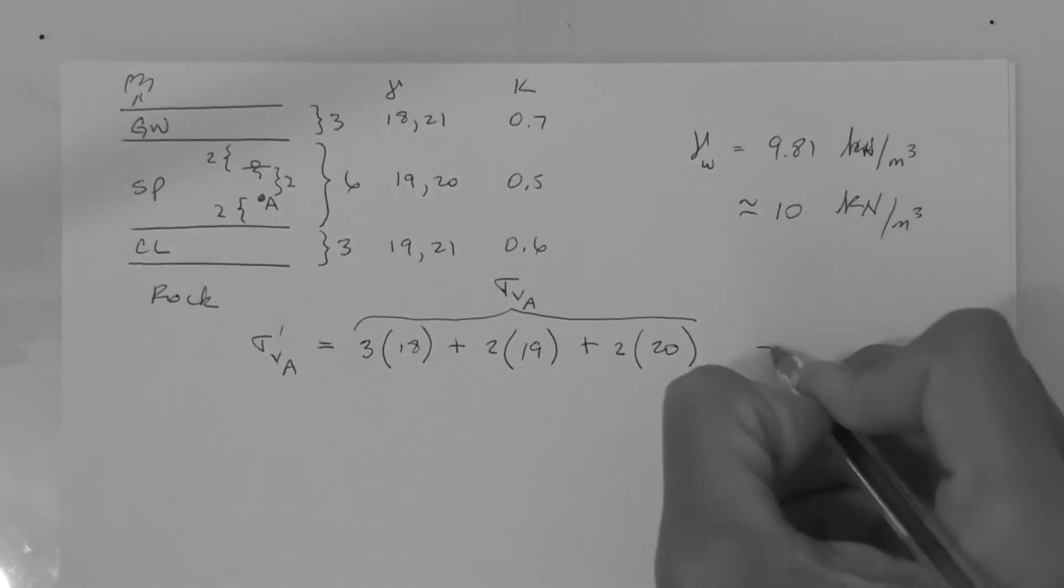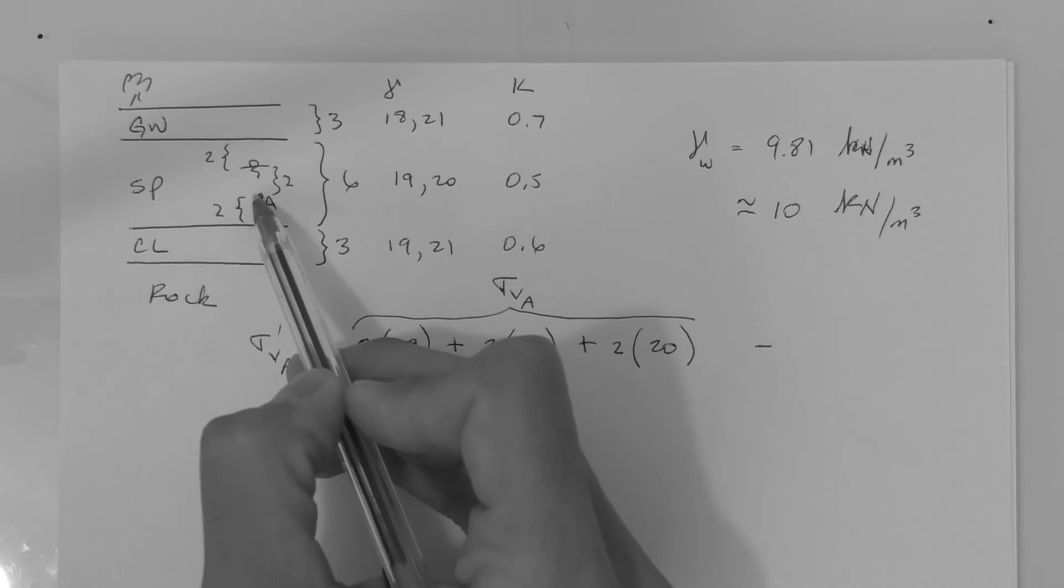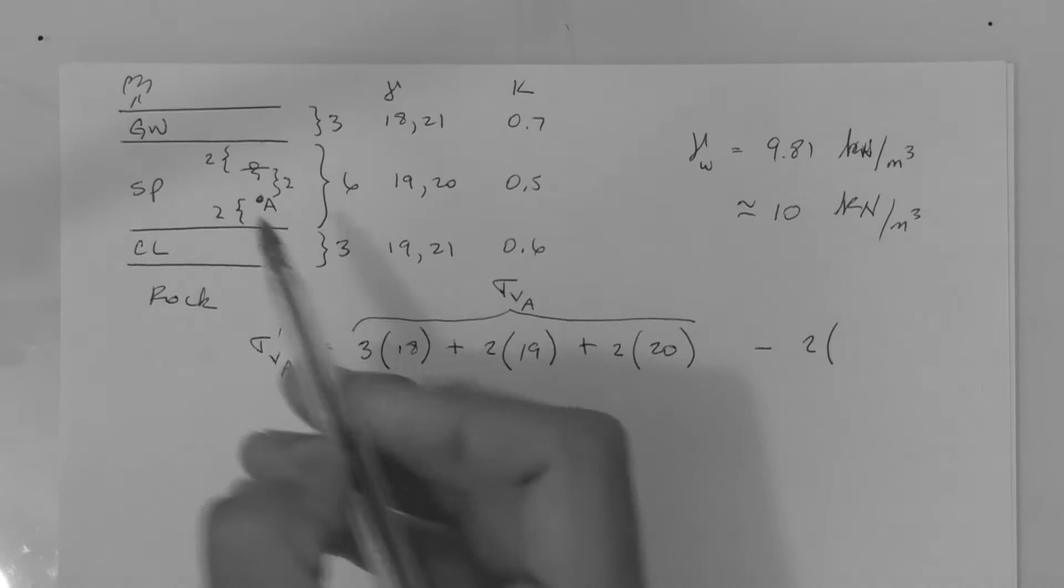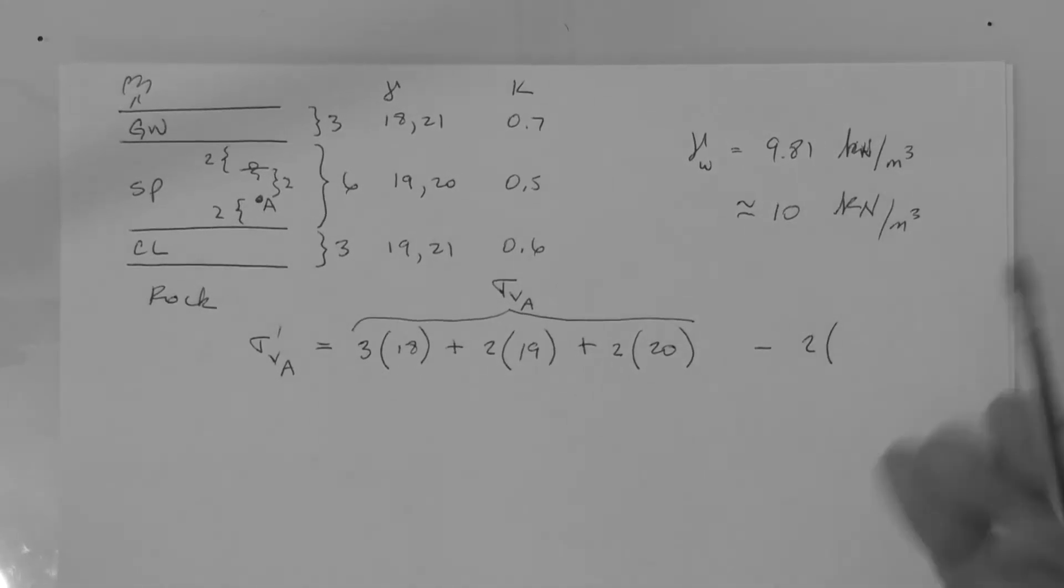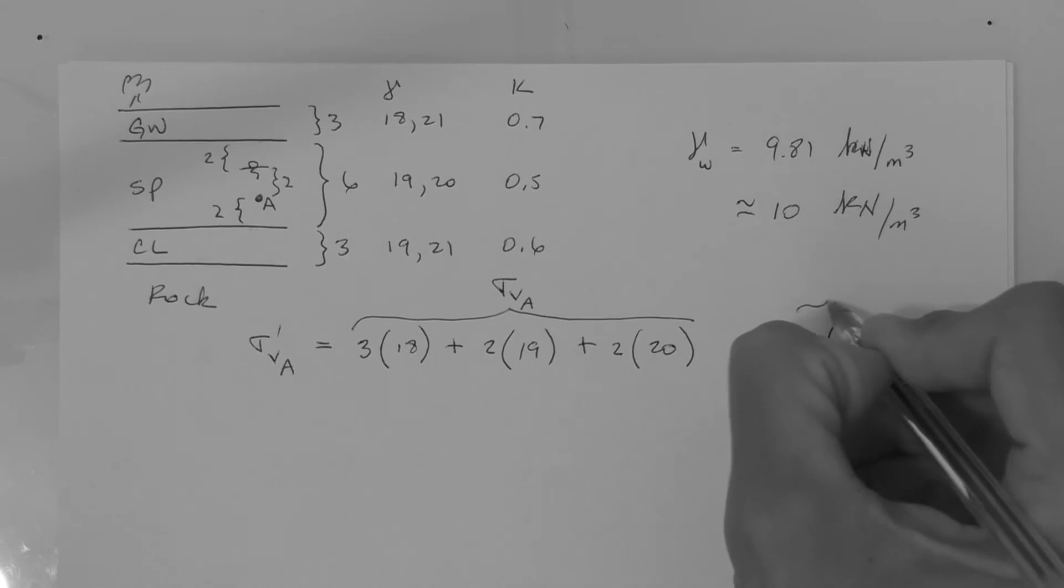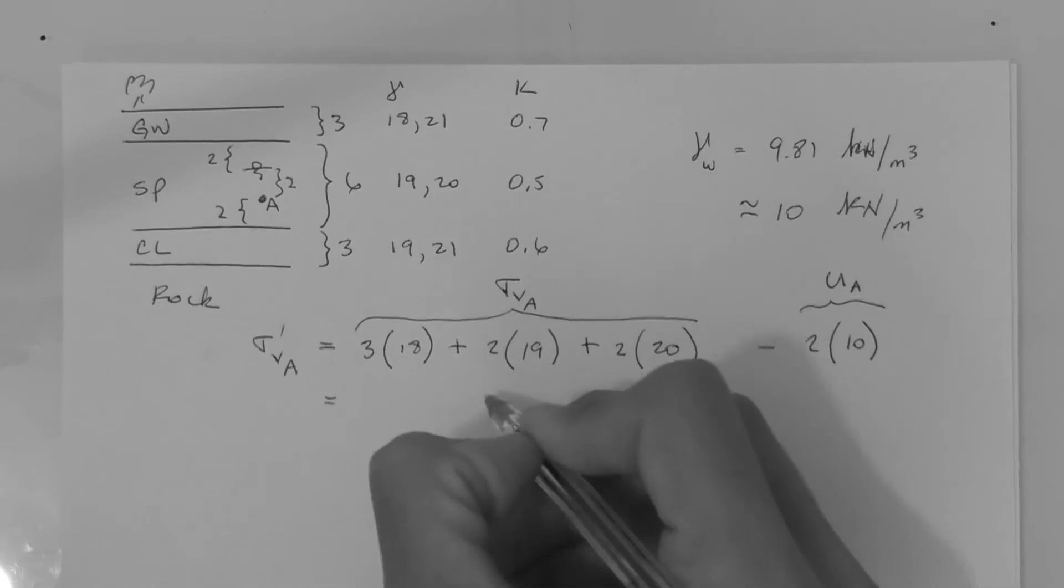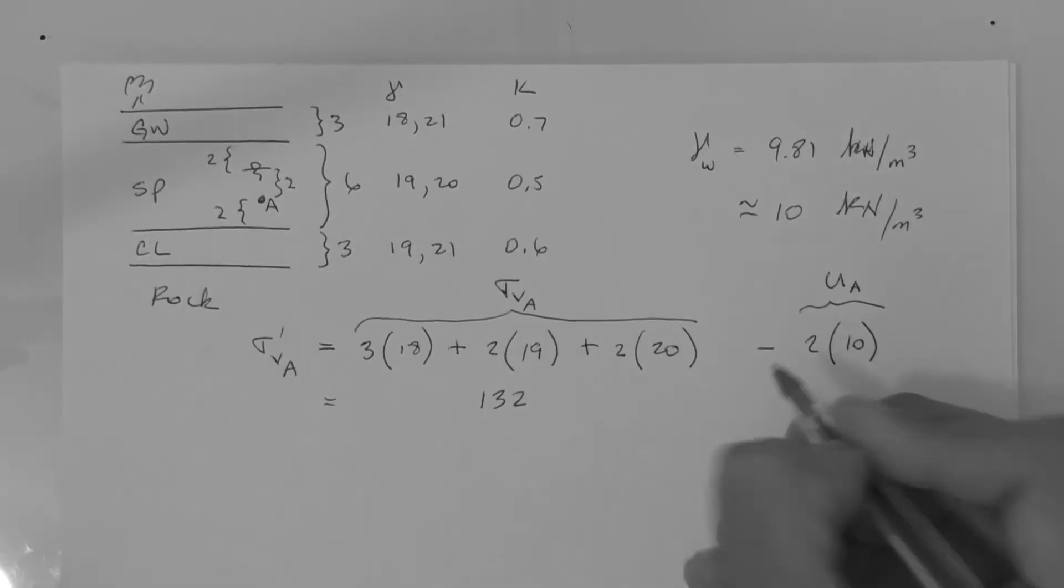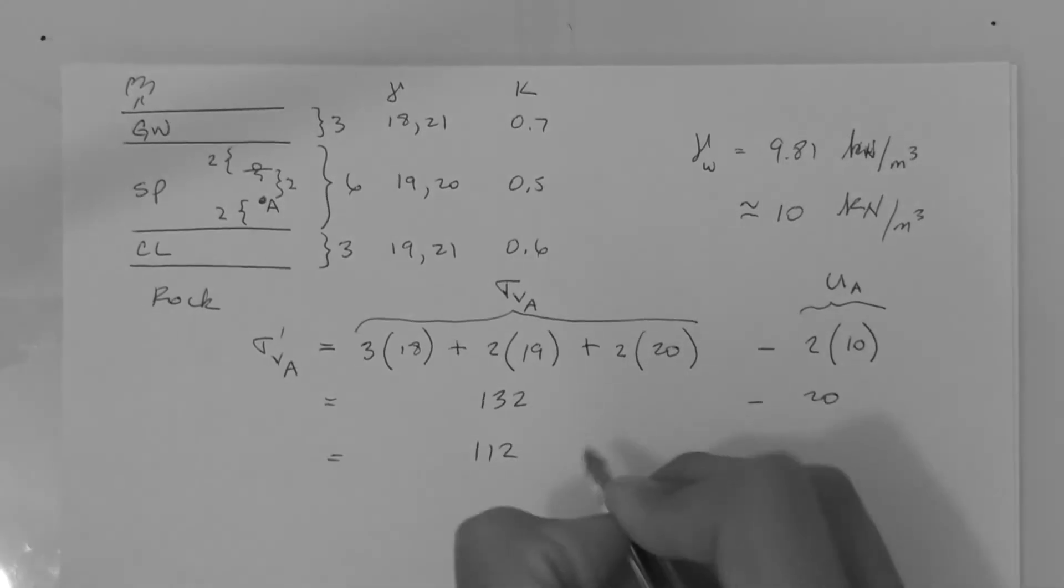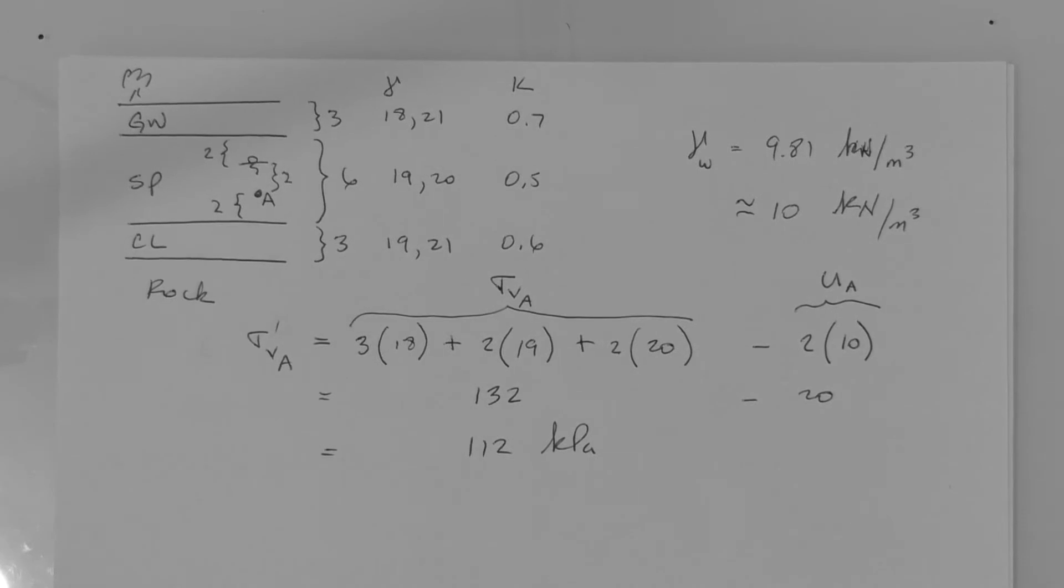Now we have to subtract the pore pressure. The pore pressure is the pressure head, which is 2 meters—the distance from the point to the water table—times the unit weight of water, which we said is 10. So that's 2 times 10, the hydrostatic pore pressure at point A. This gives us 132 minus 20, which is 112 kPa, the vertical effective stress at point A.